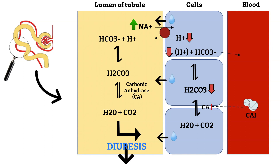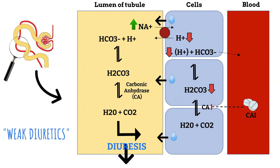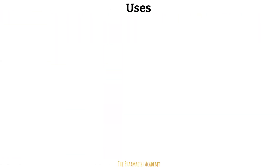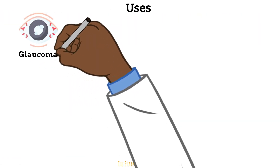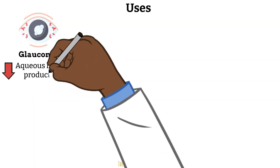Carbonic anhydrase inhibitors are considered weak diuretics because most of the sodium in the urine will eventually be reabsorbed at the loop of Henle or the DCT. In clinical practice, carbonic anhydrase inhibitors are more recognized for the treatment of glaucoma, where there is damage to the optic nerve because of a buildup of aqueous humor. The carbonic anhydrase enzyme is inhibited in the eyes to reduce the production of aqueous humor.